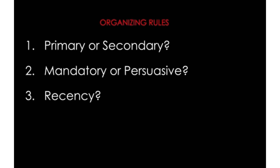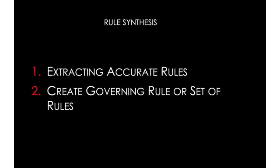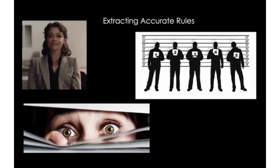Now let's talk about rule synthesis. Rule synthesis is the process of integrating a rule or principle from several cases. You extract accurate rules from individual cases and then evaluate those extracted rules collectively to create a governing rule or set of rules. To help piece this together, let's do another example. Our friend Jennifer Walters is back, this time writing a synthesized rule about eyewitness accuracy in a criminal case. There's no relevant statute or binding appellate case clearly articulating the rule in this jurisdiction, but she's found the following rule statements from relevant case law.